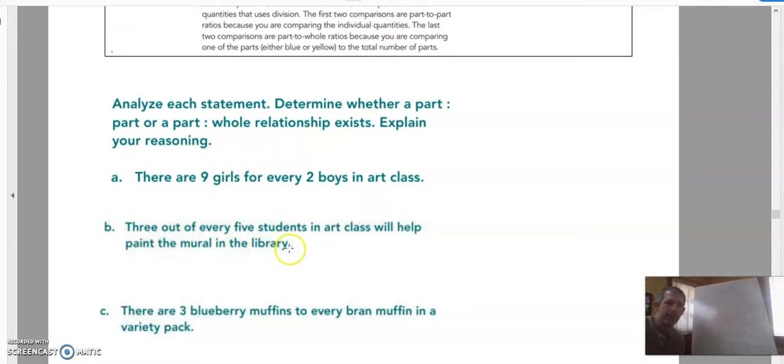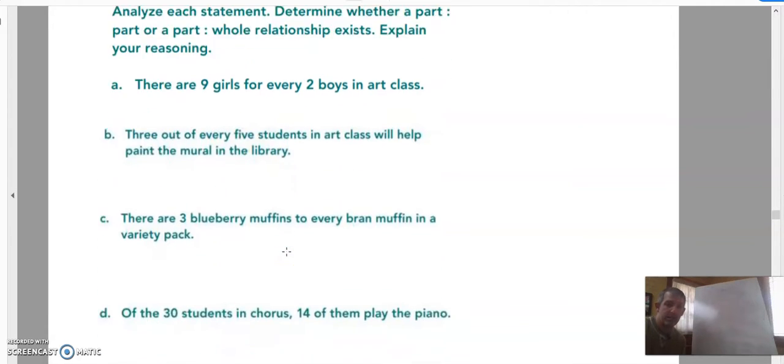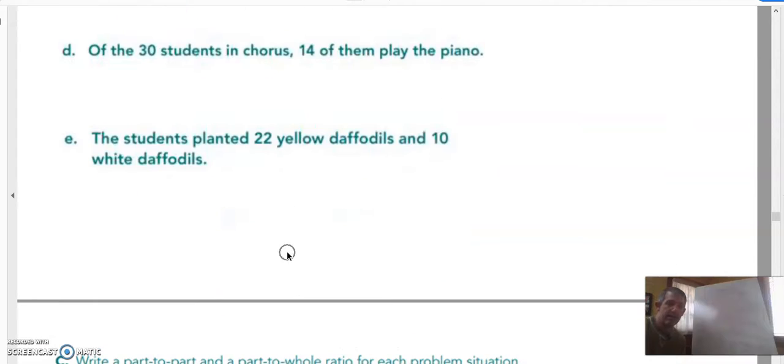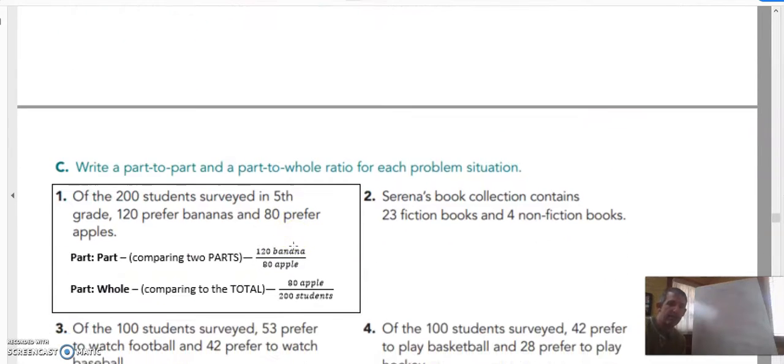B, three out of every five students in our class will help paint the mural in the library. Three represents a part that's going to help paint the mural. Every five students represents a total. So three is a part out of every five is a whole. That's because it's comparing a part to a whole. So you guys can finish off that page.